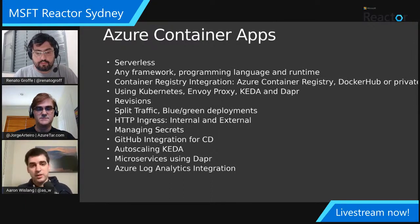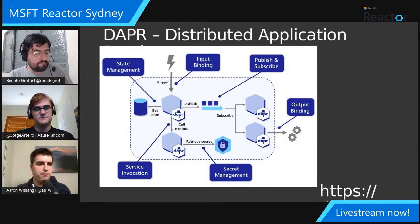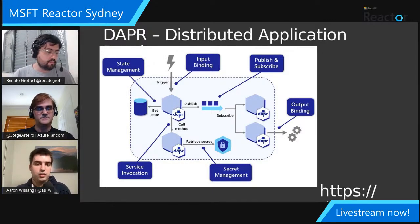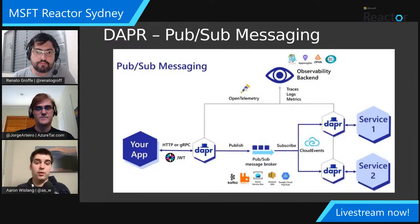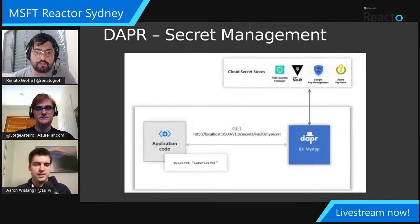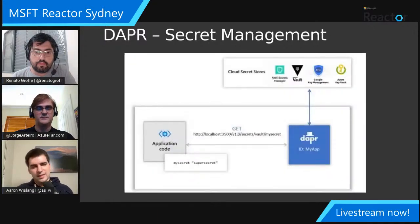We also use another project called DAPR — the Distributed Application Runtime — which makes it easier to build distributed applications with things like remote service invocation, the ability to work with many different types of state stores with a unified API, the ability to do publish and subscribe, and things like tracing and observability. There are many different pluggable backends, and you don't have to care about what the implementation is on the back end.